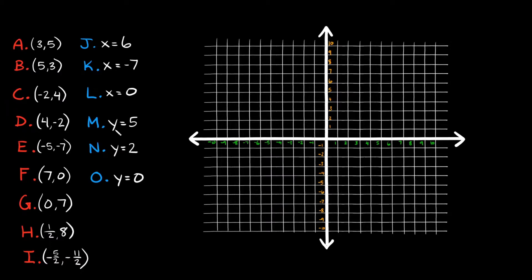Alright, so let's get into this. The first thing you need to understand about this Cartesian coordinate system, or rectangular coordinate system, is that it has two axes. These two axes are basically just number lines — one runs horizontally and one runs vertically. The horizontal one is your x-axis, and the vertical one is your y-axis. This point right here where they both intersect is called the origin. Whenever you plot any points, you always start counting from the origin.